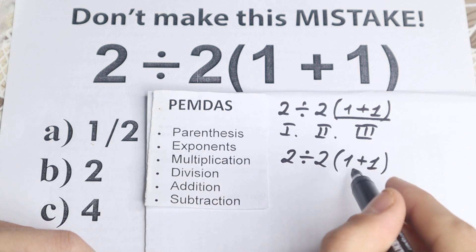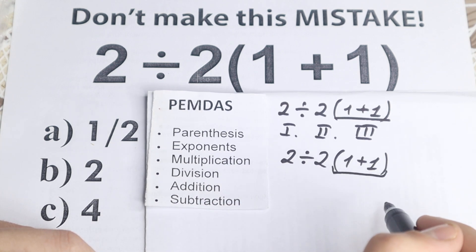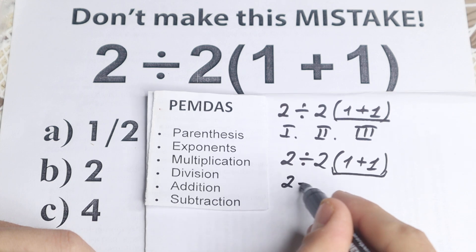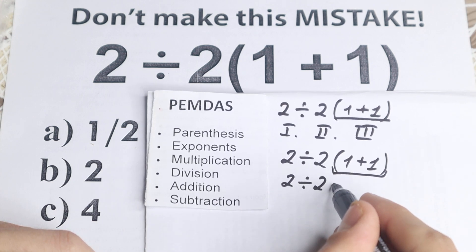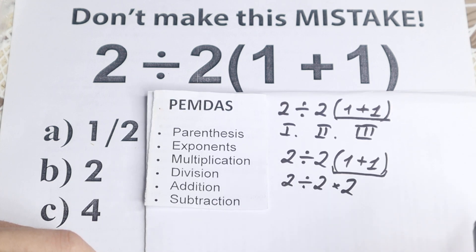I just wanted to rewrite this problem. So 2 divided by 2 and in parentheses 1 plus 1. Okay, let's start. First step, parentheses. So let's start with parentheses. 1 plus 1 equal to 2. So we will get 2 divided by 2 times 2. Okay, the next step, exponents. Are there any exponents right here? No, I don't see any of those.